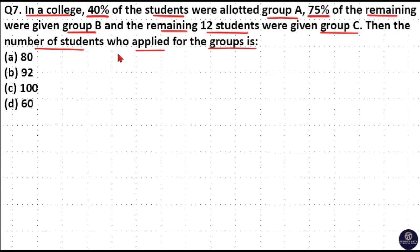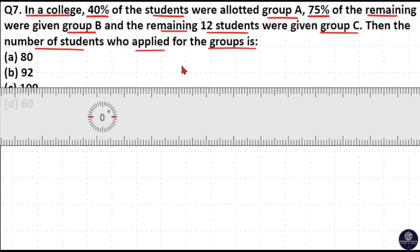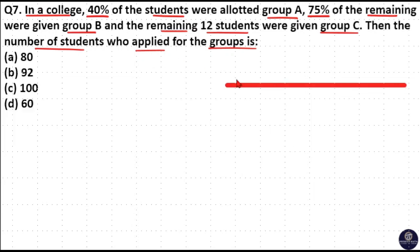That means students who applied for all groups. Here, in a college, 40% of the total students were given to group A.